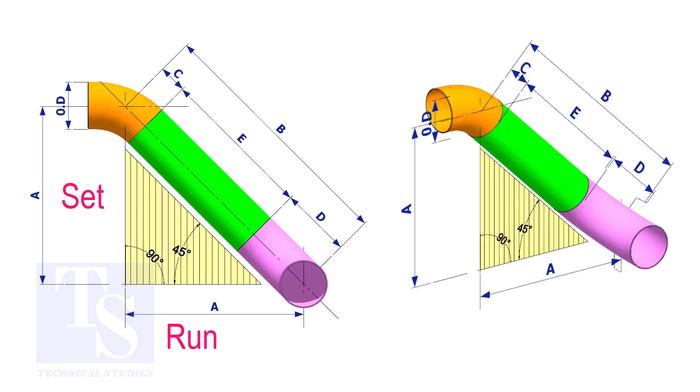In an offset, if the including angle is 45 degree, the set and the run shall be the same. If the value of the set and the run are equal, the value of the travel is set or the run multiplied by 1.414.